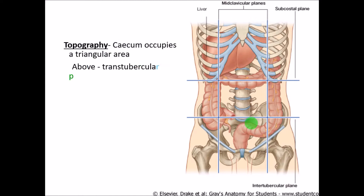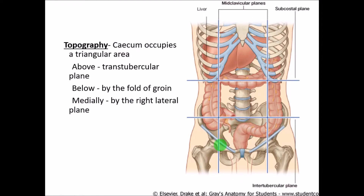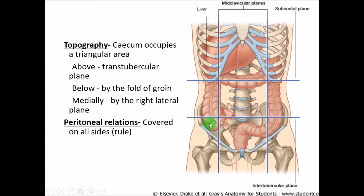Topography of the cecum: it is present in a triangular area bounded above by the transtubercular plane passing through the two tubercles, below by the fold of the groin or the lateral half of the inguinal ligament, and medially by the right lateral plane. This is the area where it can be traced.